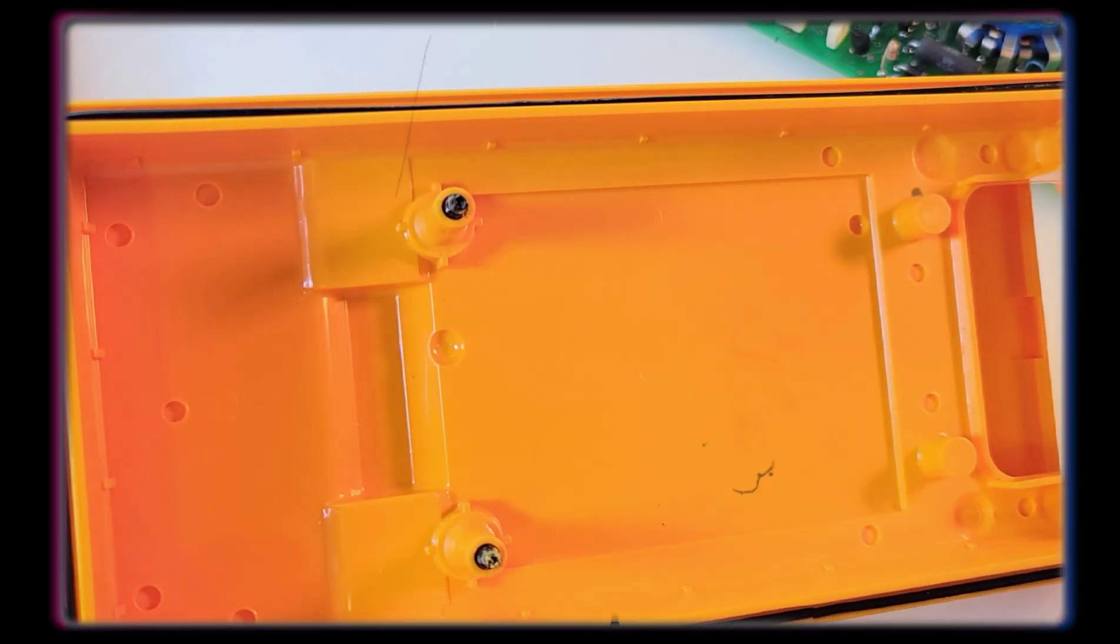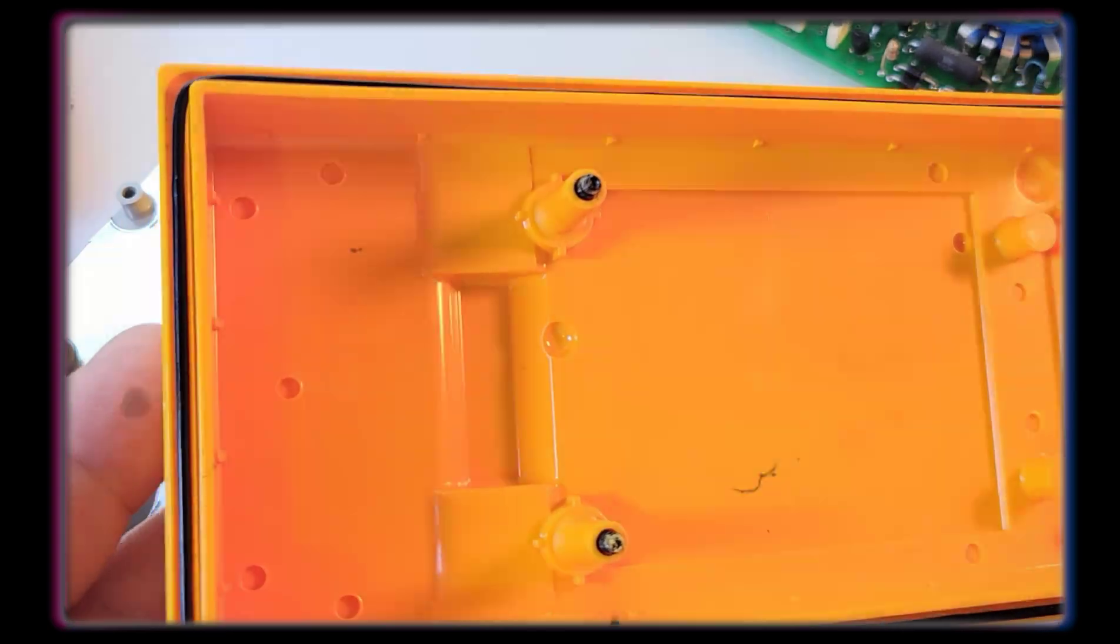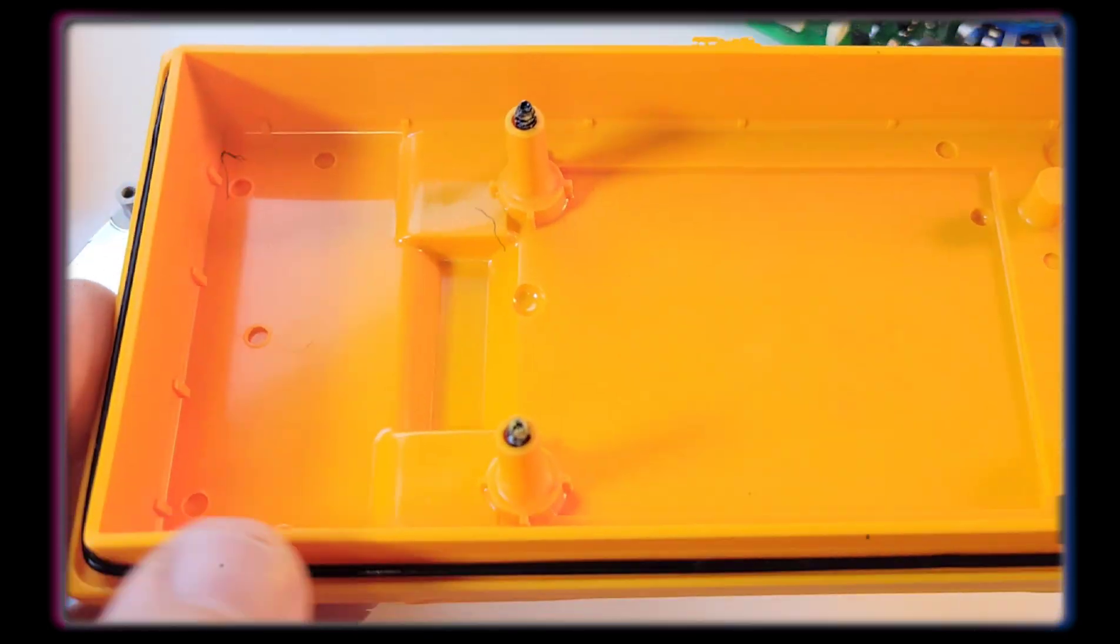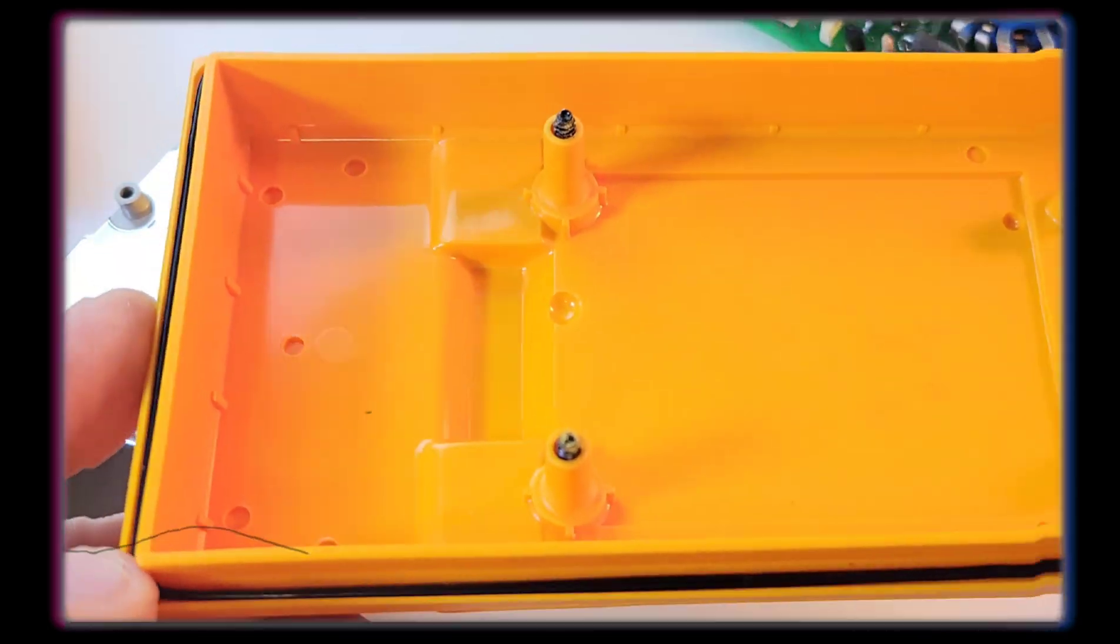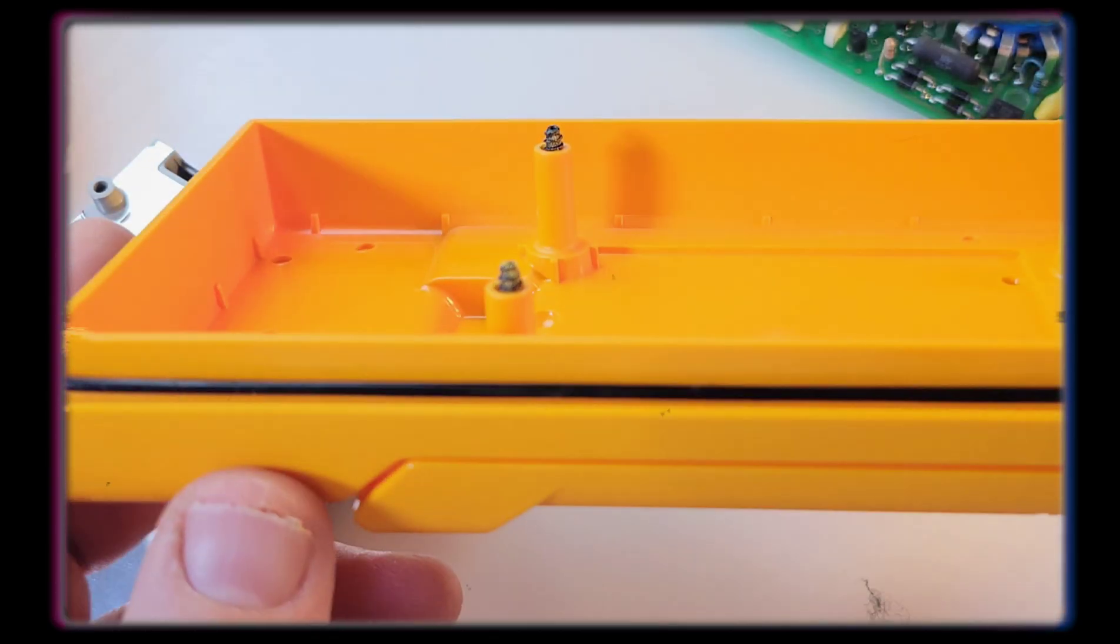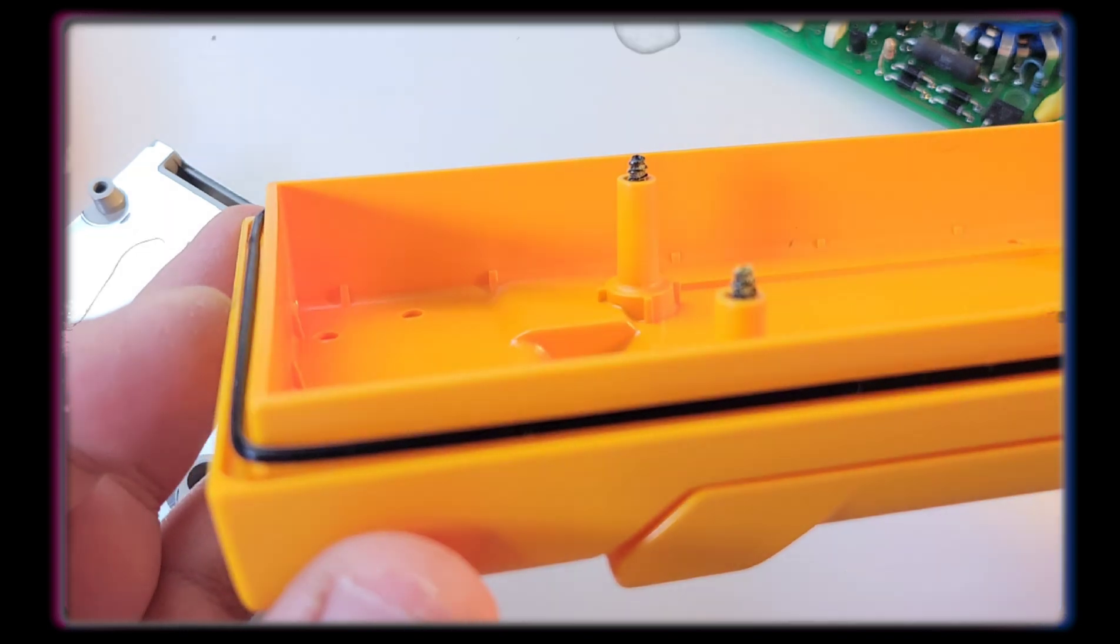So of course, where this meter really shines is on the inside. This thing is built like a freaking tank. Oh, wow. Look at that, beautiful O-ring seal. Encompasses the entire multimeter, because of course, this was meant for the great outdoors.